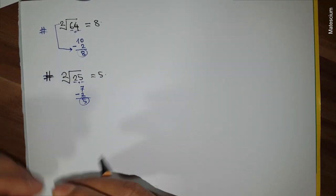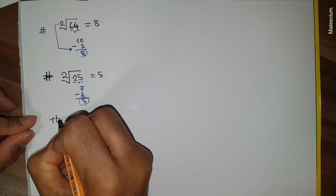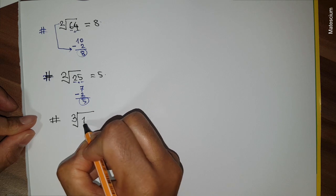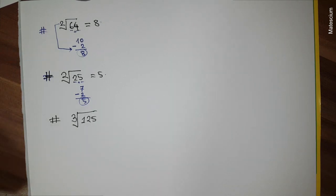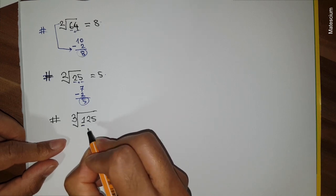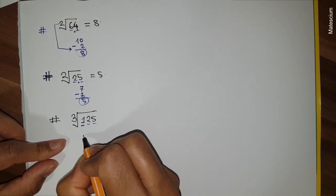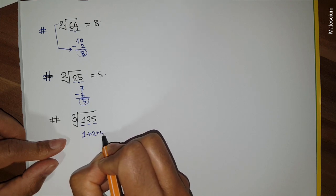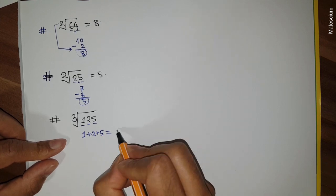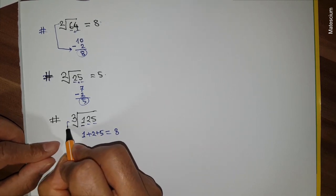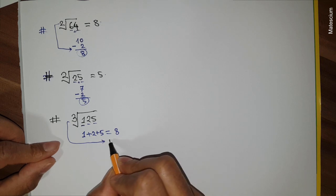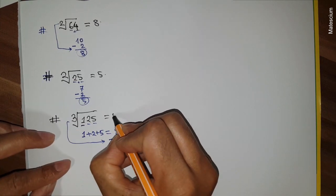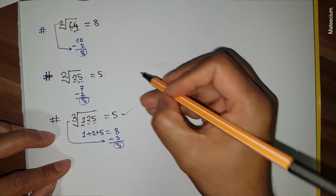It seems like similar examples — let's try a different one: 3√125. How can you solve it? Similar way: add the digits 1 plus 2 plus 5, which is 8, and then subtract the 3 — 8 minus 3 is 5. So the answer is 5. It's so simple!